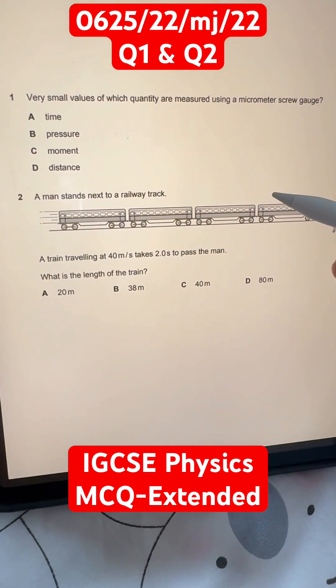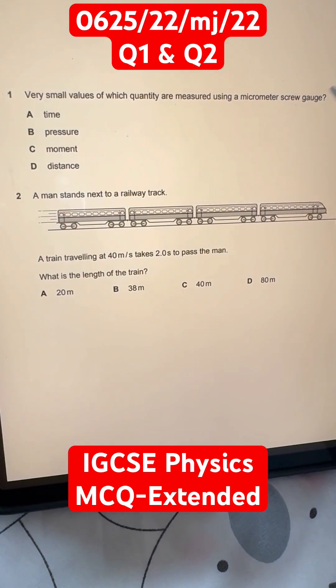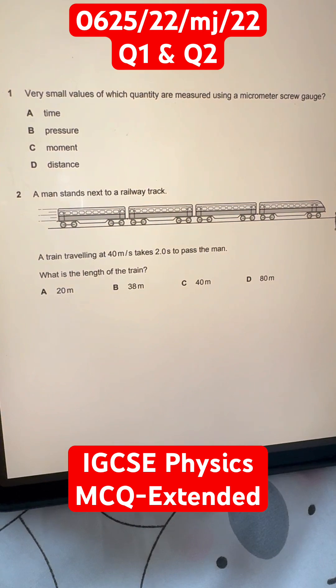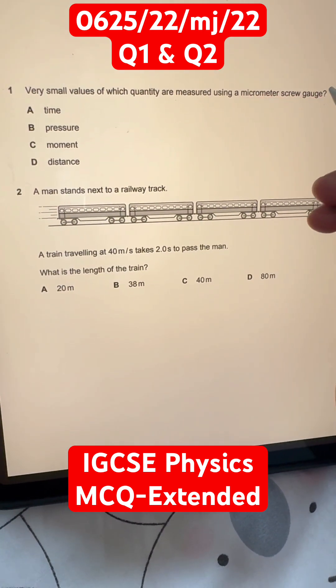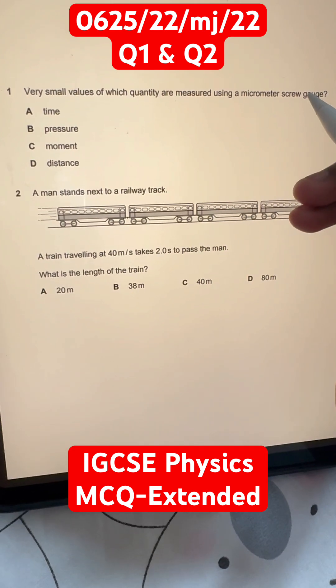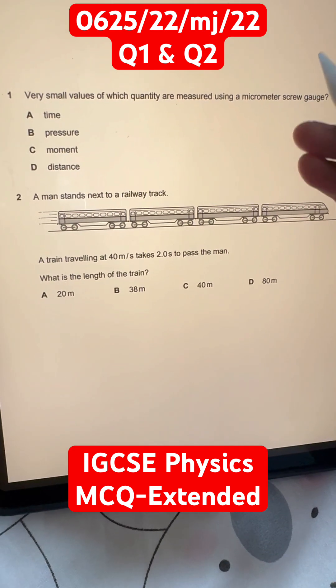Question 1. Very small values of which quantity are measured using a micrometer screw gauge? We have four options here. In the syllabus, we know that a micrometer screw gauge is used to measure extremely small units of length. In other words, distance.